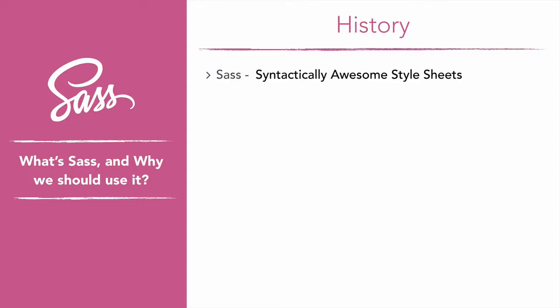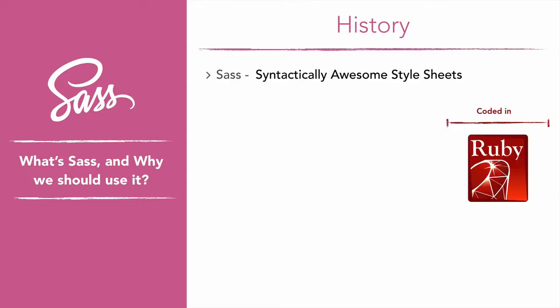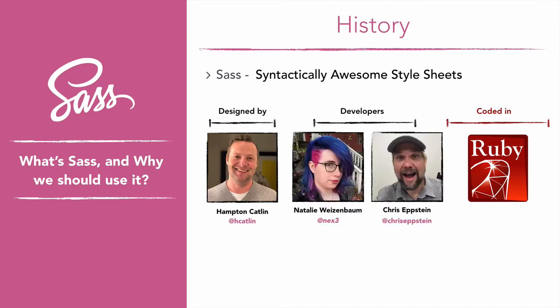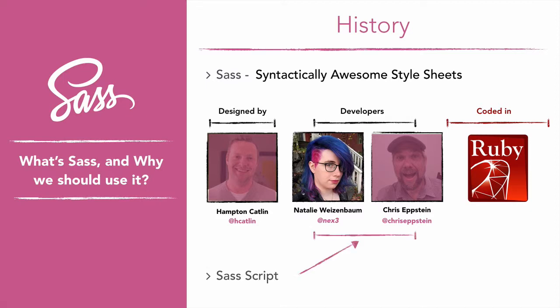SASS, or Syntactically Awesome Stylesheets, is a stylesheet language originally written in Ruby by Hampton Catlin. Later, Chris and Natalie joined the core team, with Natalie still being the most active in maintaining the codebase today. Natalie and Chris continued to extend SASS with SassScript, which is a script that allows us to compute CSS selectors, properties, or values using SASS expressions.